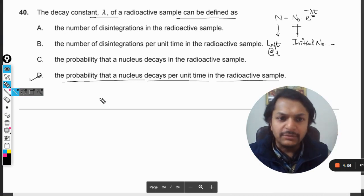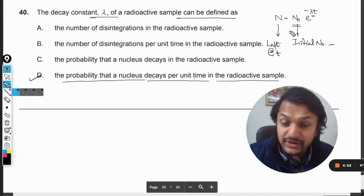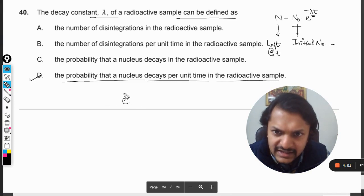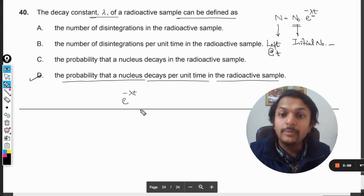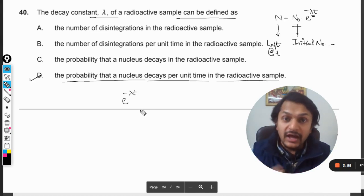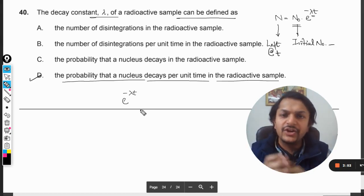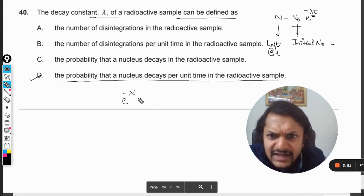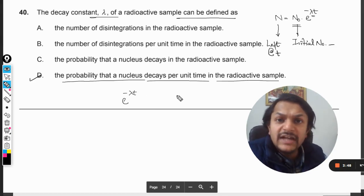You see what will be the units of lambda from this? So if I say that e raised to power minus lambda t, from our chapter number one in IB physics which is in regards to the units, we can see that lambda t should come out to be dimensionless and unitless numeric.